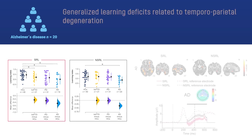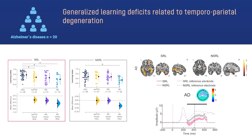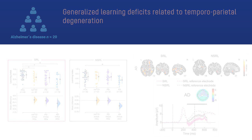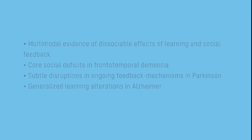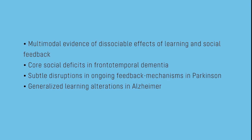Finally, temporoparietal degeneration in Alzheimer's disease may explain their generalized associative learning deficits and lack of social feedback facilitation, beyond preserved frontal correlates. In sum, our study reveals convergent multimodal evidence of the beneficial effects of social feedback on learning.